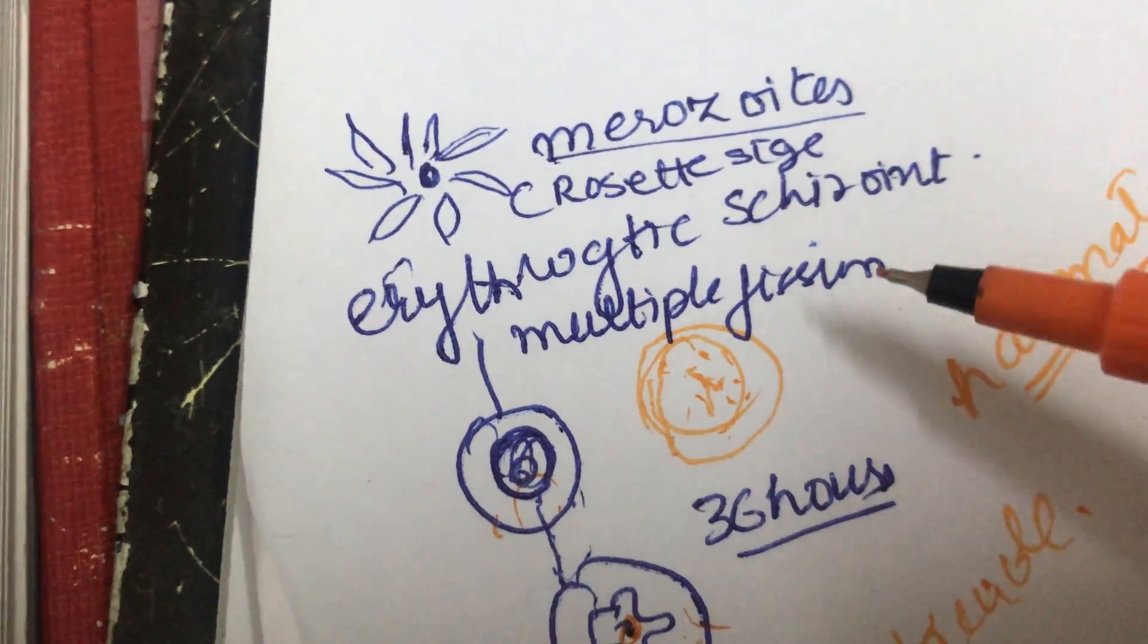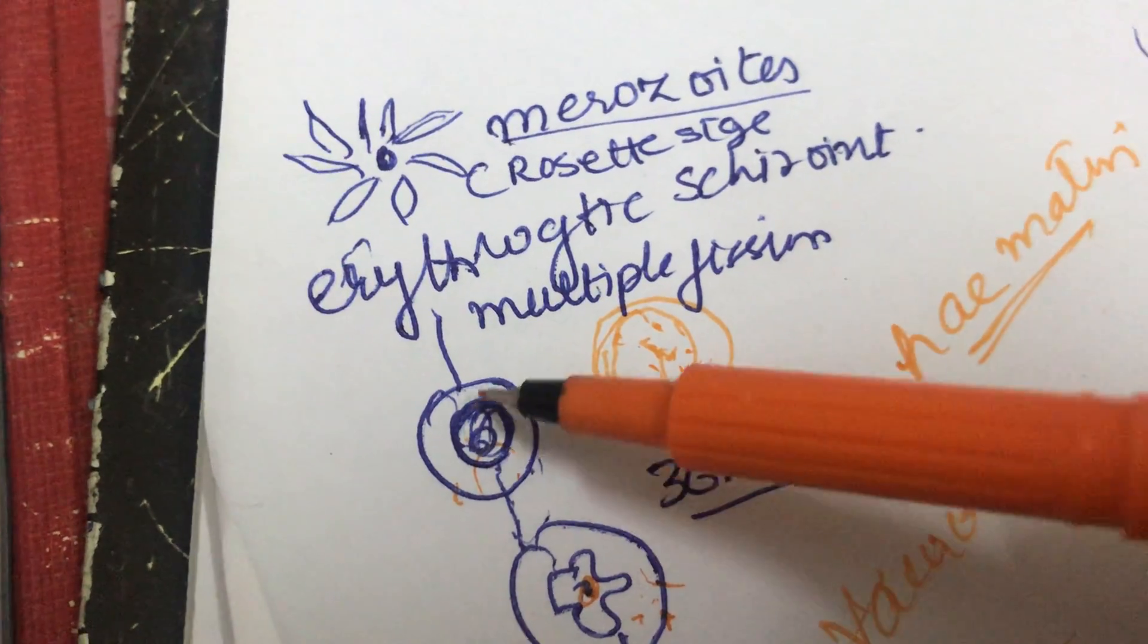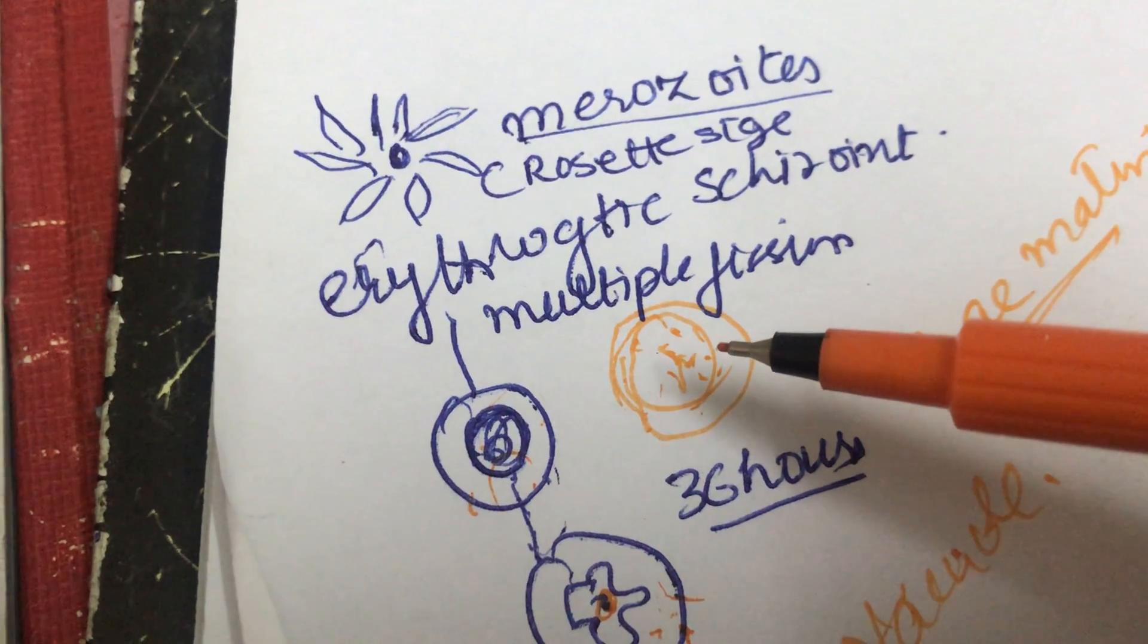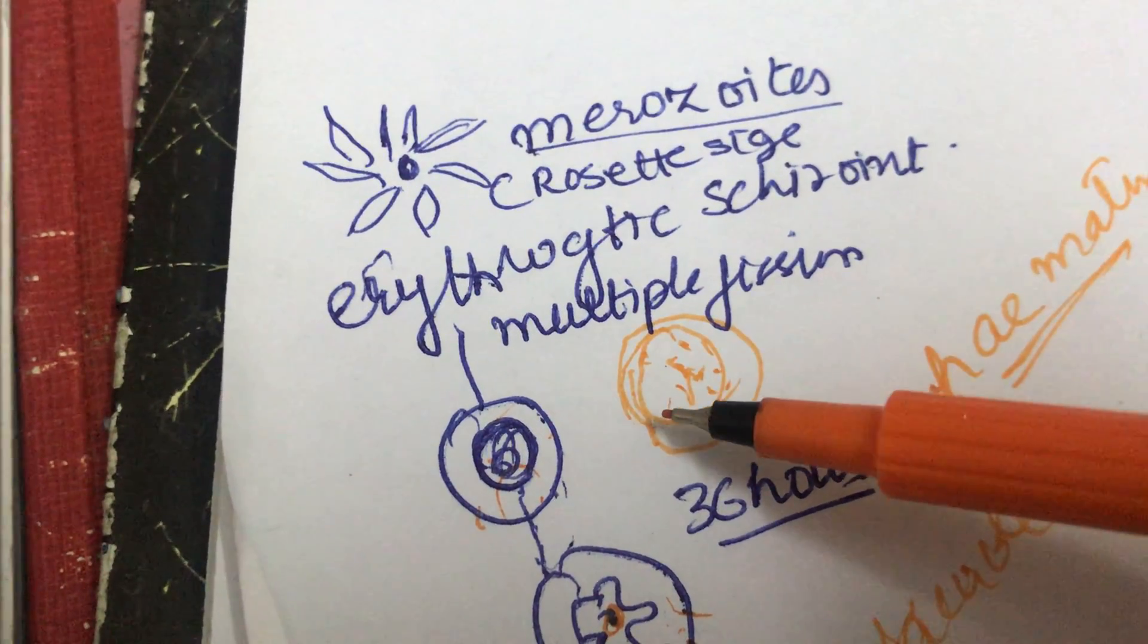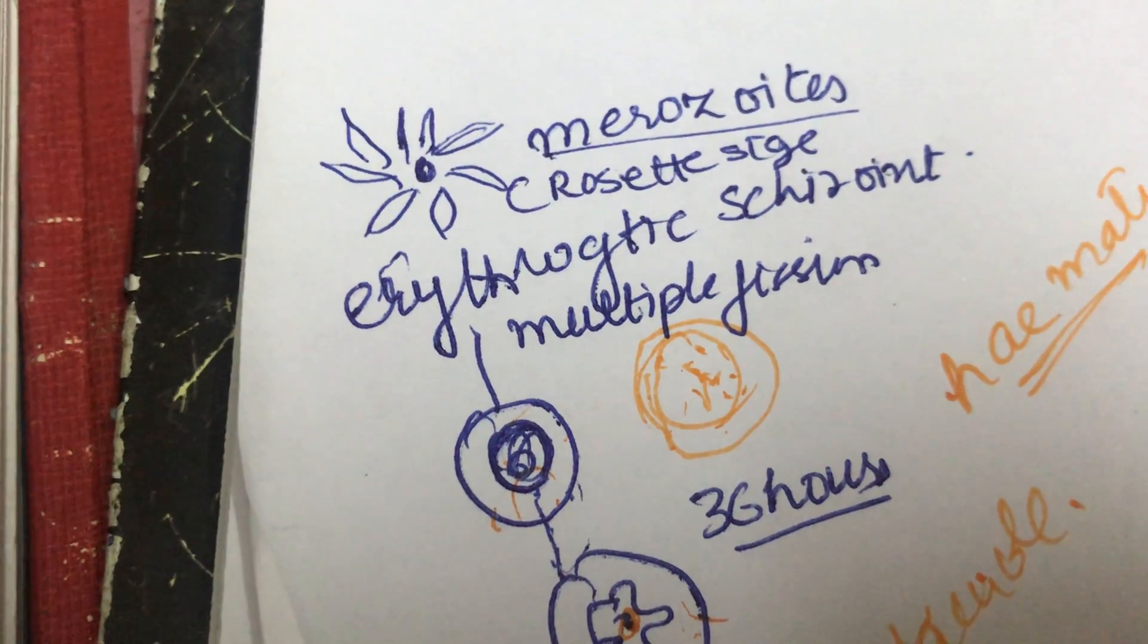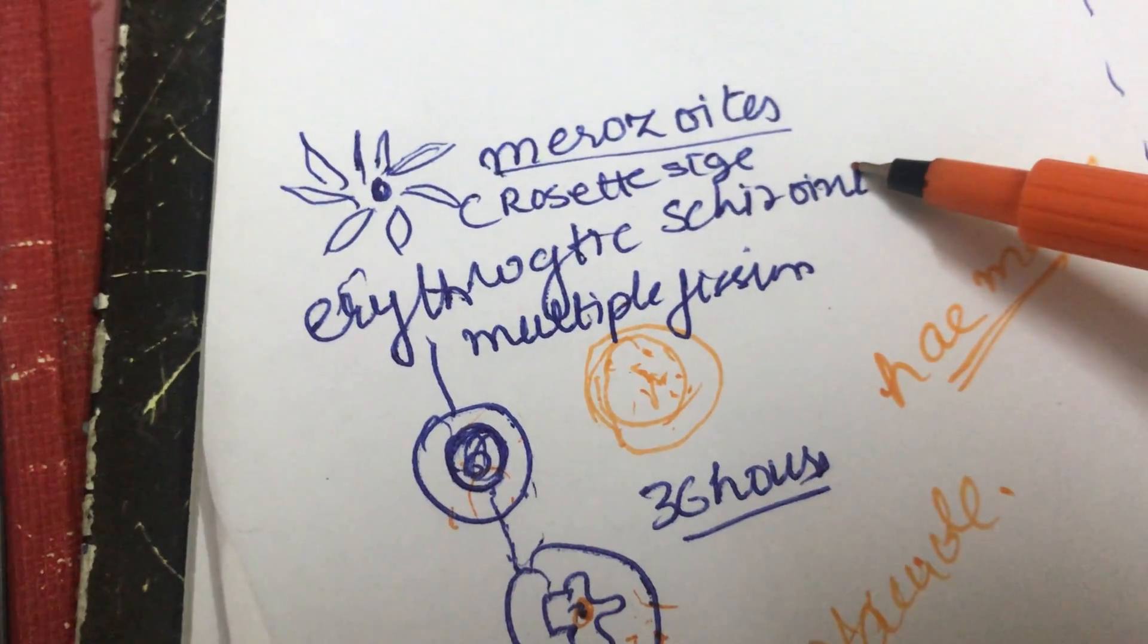The adult trophozoite almost fills the carpsis and gets enlarged in size. It is now ready to multiply by multiple fissions, called erythrocytic schizogony.